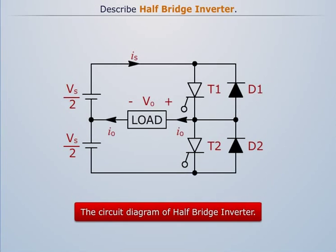The power circuit of half bridge inverter consists of two thyristors and two diodes. Each thyristor conducts for the duration of its gate pulse.